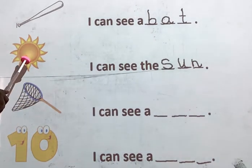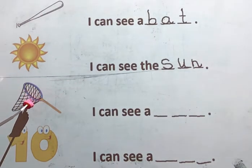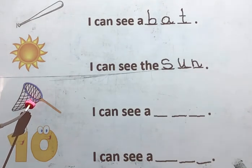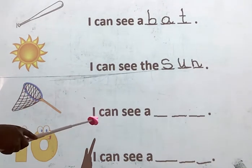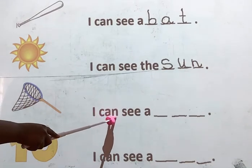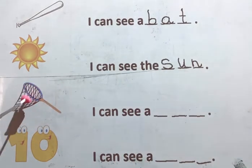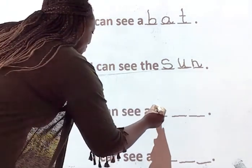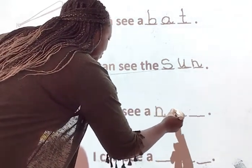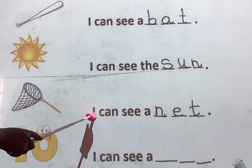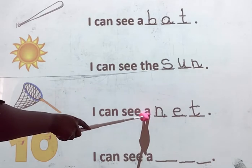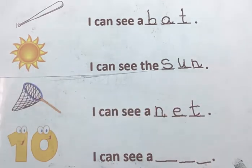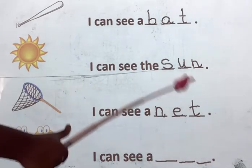Okay, the next picture we have is the net — net. Very good. I, can, see, a, net. Give me the sounds in net: N, A, T. So let's write it down: N, A, T. So let's read the sentence: I, can, see, a, net. Very good. Can you see a net? Yes. Good job.